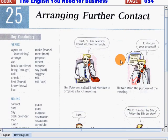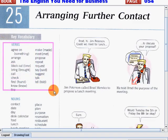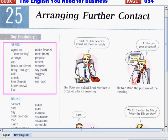Let's begin with our verbs first. I will read the following words slowly and clearly — please listen and follow me. Agree on. Arrange. Ask. Block out. Bring. Call. Check. Find.